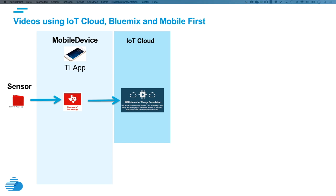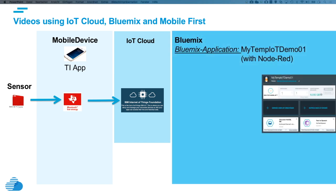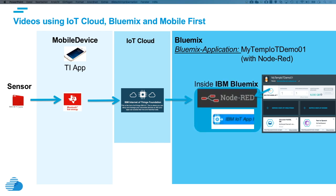Now we can access the data and utilize it in a platform as a service in Bluemix. There we build an app where we can examine the temperature data and build a business logic around this. We can store the data and reuse services. These applications use Node-RED for the easy integration of the IoT. You will see these in videos later.